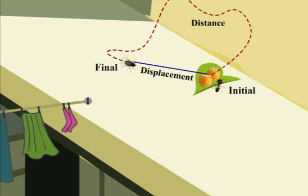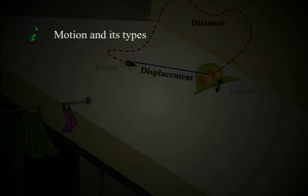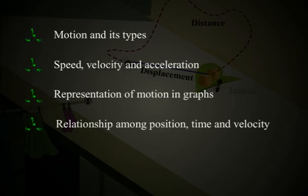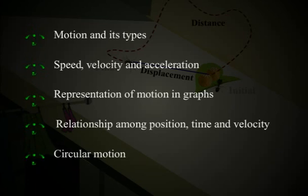With this chapter, let us gain an understanding of motion and its types, speed, velocity and acceleration, representation of motion in graphs, relationship among position, time and velocity, and circular motion.